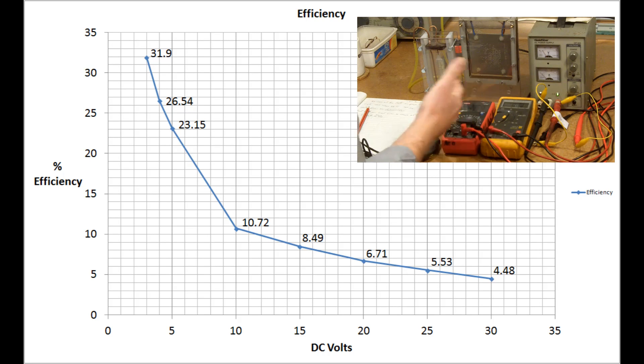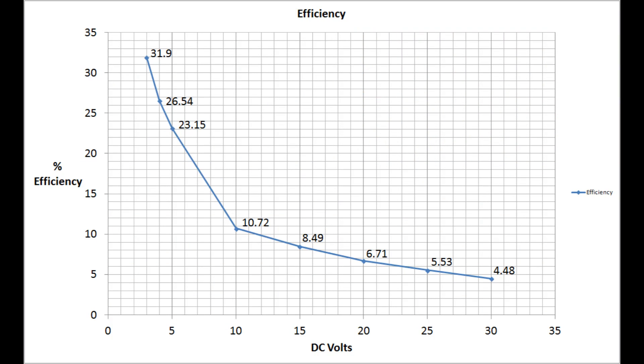This first graph shows the efficiency, and that's covering the range of 3 volts to 30 volts. Essentially it's the output divided by the input multiplied by 100. I've taken the calorific value of the HHO as 7744 joules per litre, or 7744 watts seconds per litre if you prefer.